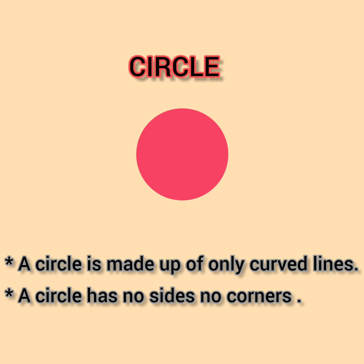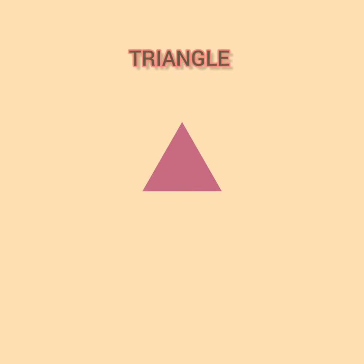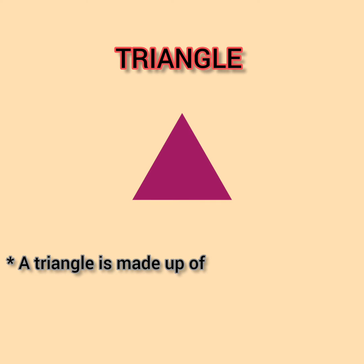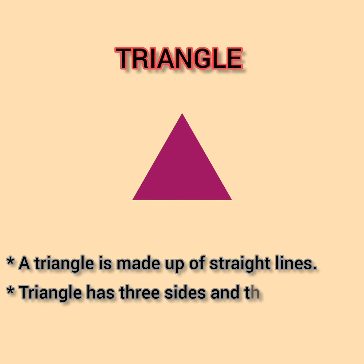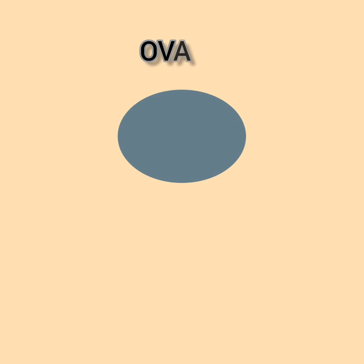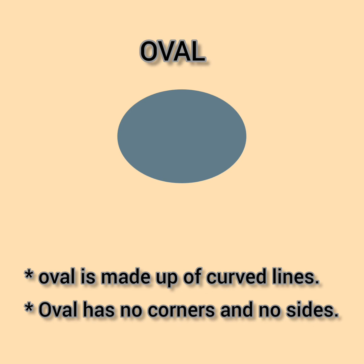A circle has no sides and no corners. Triangle. A triangle is made up of straight lines. A triangle has three sides and three corners. Oval. An oval is made up of only curved lines. An oval has no corners and no sides.